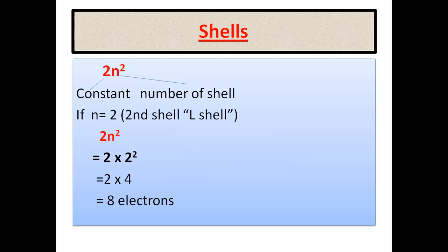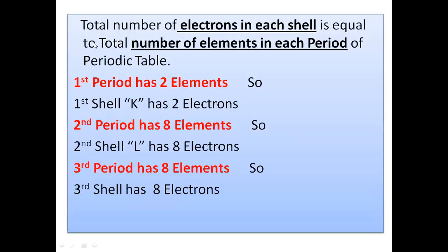Nowadays we can use a simple rule to place electrons in different shells: the total number of electrons in each shell equals the total number of elements in each period of the periodic table. The periodic table has 7 periods. The first period has 2 elements, so the first shell has 2 electrons. Shell number equals period number. The second period has 8 elements, so the second shell holds 8 electrons. The third period also has 8 elements, so the third shell fills up to 8 electrons.